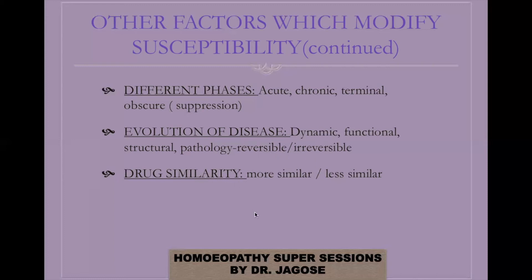Then drug similarity: the more similar the remedy, the higher the susceptibility and the higher the potency selection. Less similar remedy means lower susceptibility and lower potency. The degree of similarity tells you about the state of susceptibility. If the totality is characteristic and you are matching the disease with the drug totality with maximum similarity, susceptibility is high. If you are only getting similarity at a few levels — choosing a similar but not the simillimum, or a superficially acting drug — susceptibility will be low.